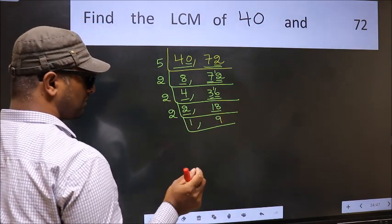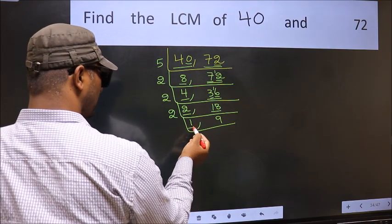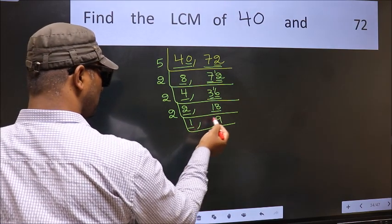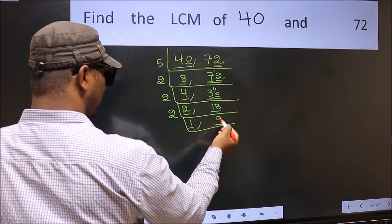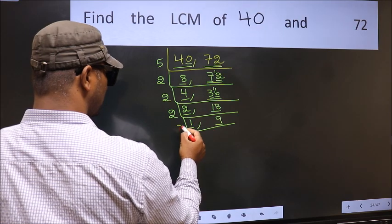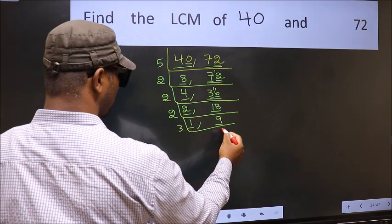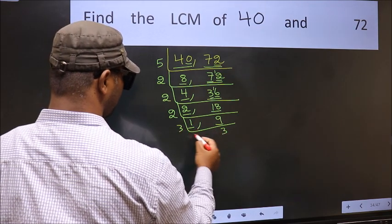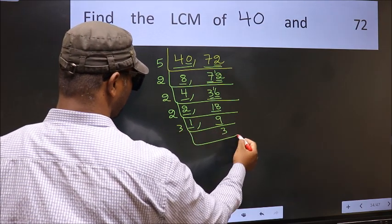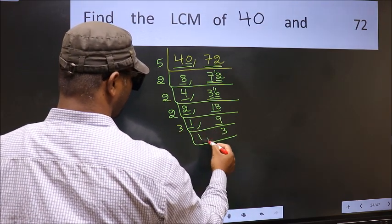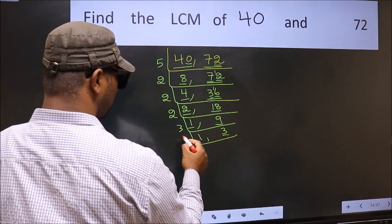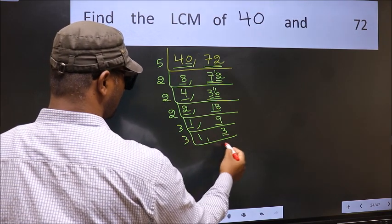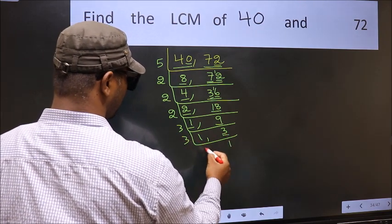Now we got 1 here, so focus on the other number, 9. 9 is 3 times 3, giving 9. Now we have 3. 3 is a prime number, so 3 times 1 is 3.